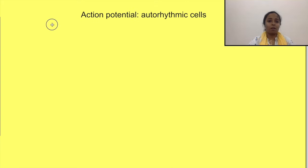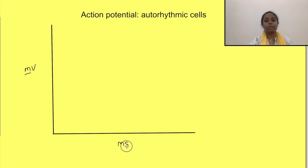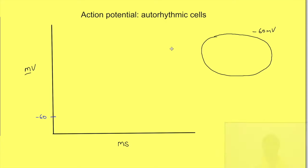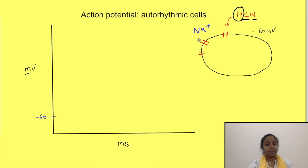So let us draw two axes: y-axis representing voltage in millivolts and x-axis representing time in milliseconds. Now we will start from a voltage of minus 60 millivolts. So this is an autorhythmic cell with a membrane potential of minus 60 millivolts. Now what happens is there are certain channels on the membrane known as HCN channels—hyperpolarization gated cyclic nucleotide channels—which open at this potential. Now these channels are permeable to sodium ions. Since the electrochemical gradient for sodium is from outside to inside, sodium ions start entering the cell.